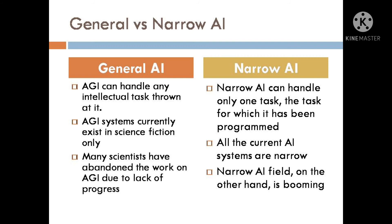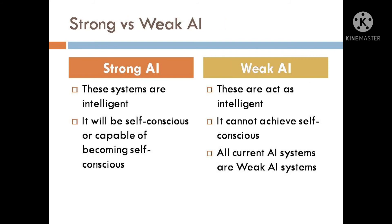We can also differentiate between Strong AI and Weak AI. Strong AI systems are truly intelligent, but Weak AI systems only act as intelligent. Strong AI systems will be self-conscious or capable of becoming self-conscious, but Weak AI cannot achieve self-consciousness. All the current AI systems are Weak AI systems.